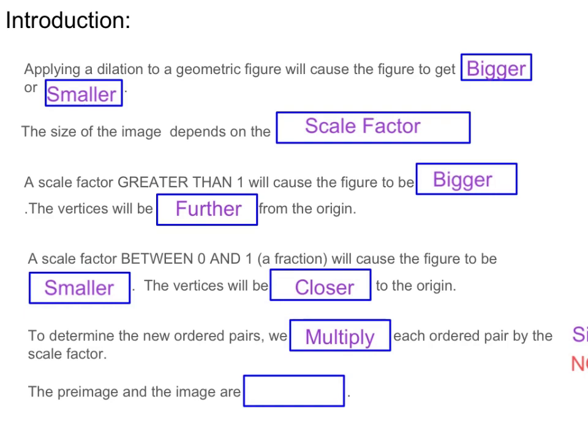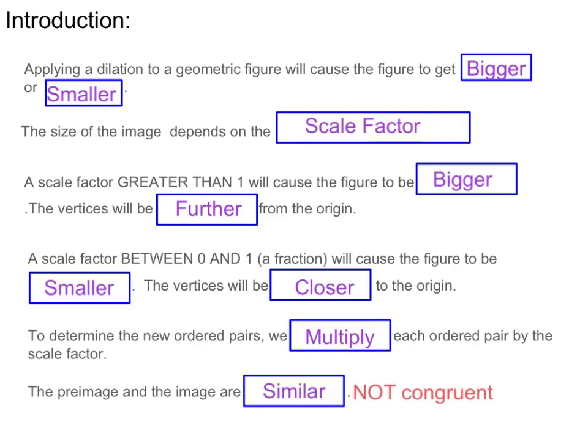The pre-image and the image are similar — they are not congruent. Other transformations are congruent; however, when we're talking about a dilation, they are not congruent. They're not going to be the same size because we're multiplying by a scale factor, so they are only similar. The other three transformations will be congruent. Dilation is the one that is not, and that is very important to know.